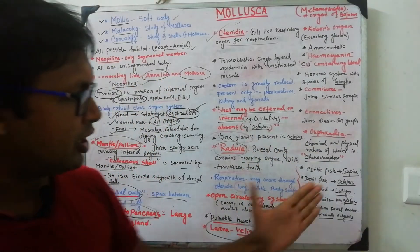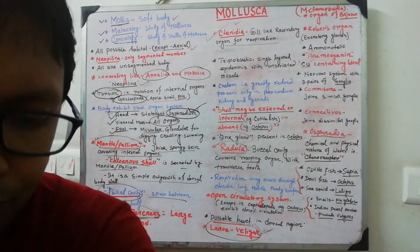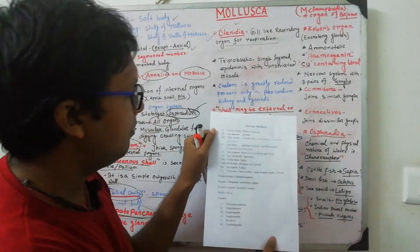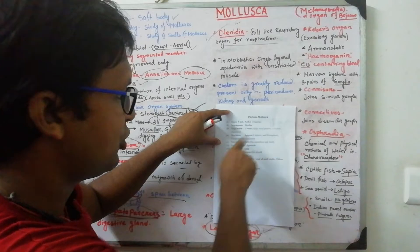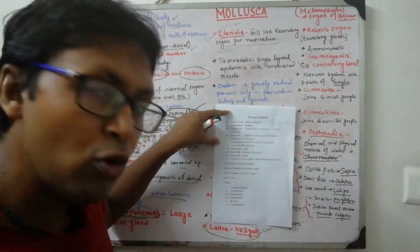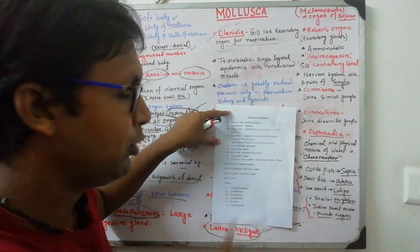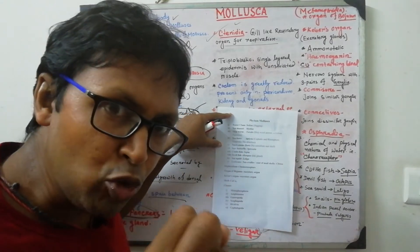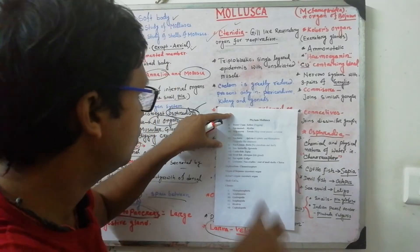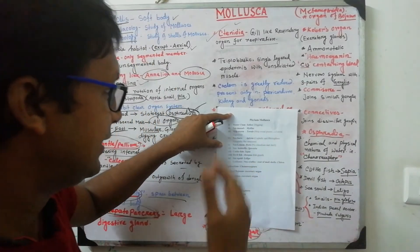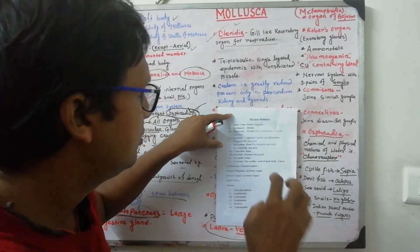Some important examples: Cuttlefish is Sepia; devilfish is Octopus; sea squid is Loligo; snail is Pila globosa. The razor clam is Solen, a specialist in digging in coastal regions. Sea mussels are Mytilus. Toredo is the shipworm, capable of boring into wooden ships and digesting cellulose — a special ability.